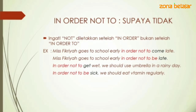Contoh kedua: Miss Vikria goes to school early in order not to be late — supaya tidak terlambat. Ada 'be' karena setelah 'be' merupakan kata sifat. Jika diletakkan di depan: In order not to get wet, we should use umbrella in a rainy day — supaya tidak kehujanan. In order not to be sick, we should eat vitamin regularly — supaya tidak sakit, kita sebaiknya mengkonsumsi vitamin secara teratur.